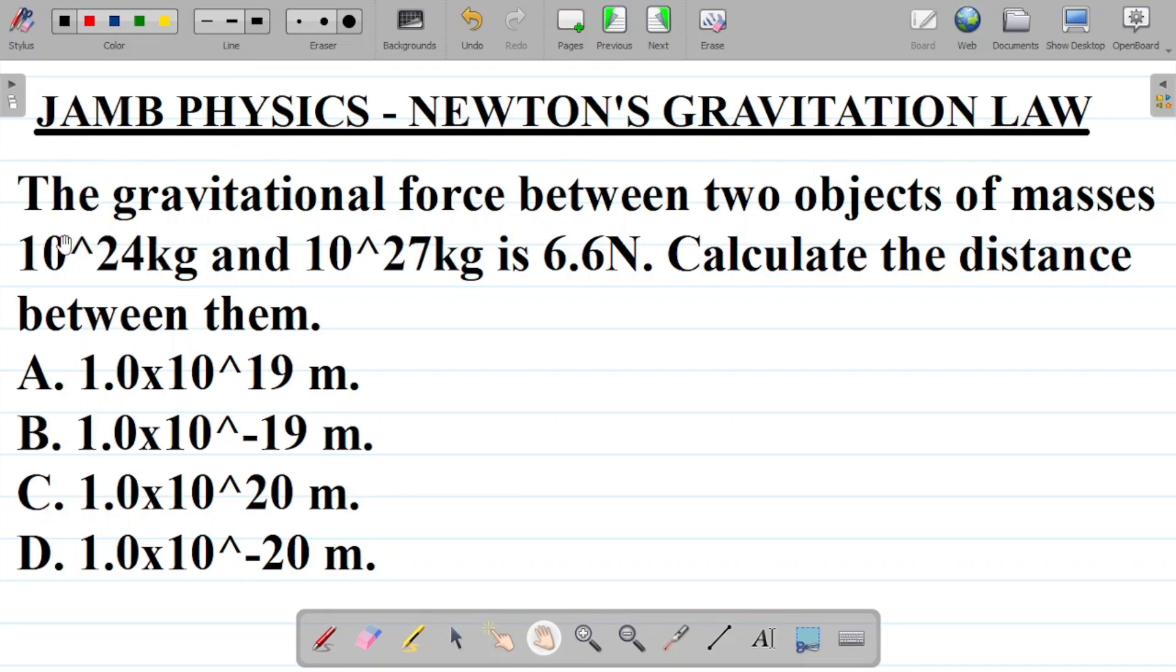The question says the gravitational force between two objects of masses 10 to the power 24 kilogram and 10 to the power 27 kilogram is 6.6 Newtons. Calculate the distance between them. You're given A as 1.0 times 10 to the power 19 meters, B is 1.0 times 10 to the power minus 19 meters, C is 1.0 times 10 to the power 20 meters, and D is 1.0 times 10 to the power minus 20 meters.